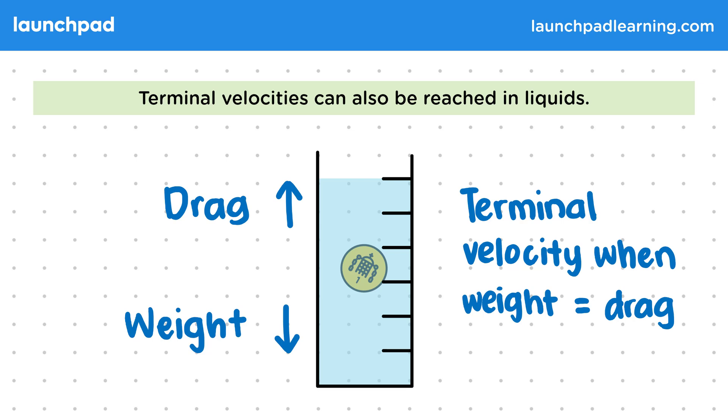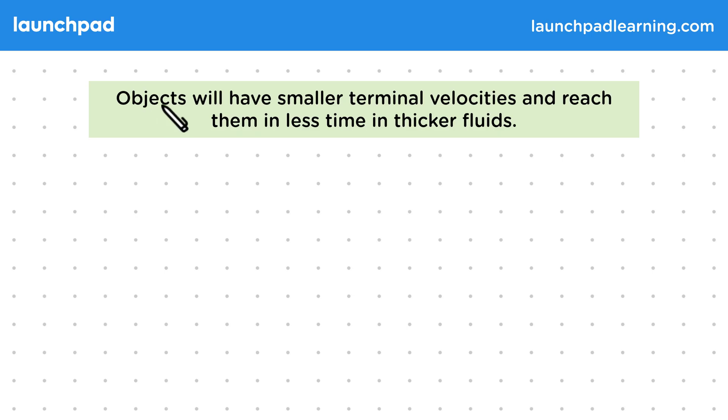One other way exams can test you on this topic is by asking you to compare the motion of objects falling through different fluids. Objects will have smaller terminal velocities and reach them in less time in thicker fluids. The technical term for the thickness of a fluid is viscosity, but you probably won't see that word much at GCSE. It's a measure of how difficult it is to move through a fluid and affects how strong drag forces are in them.